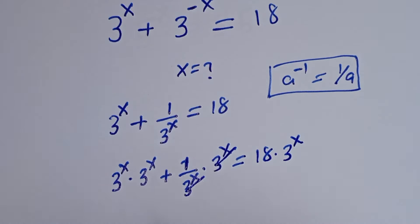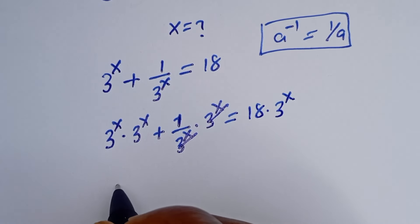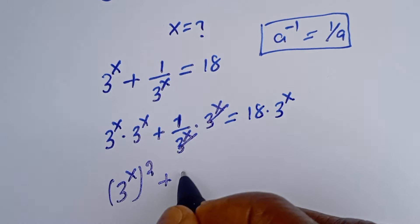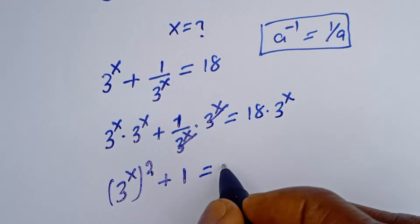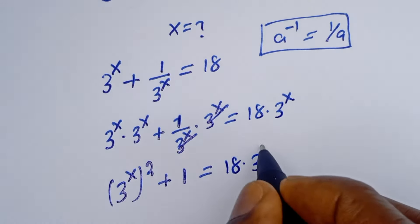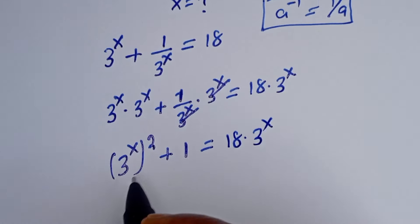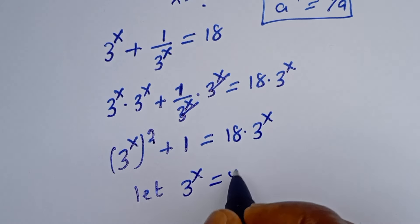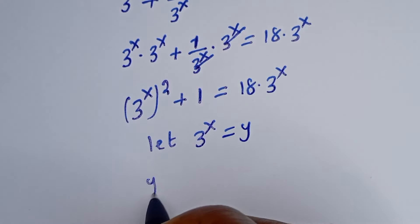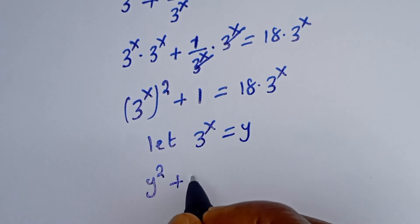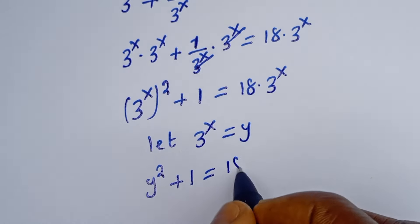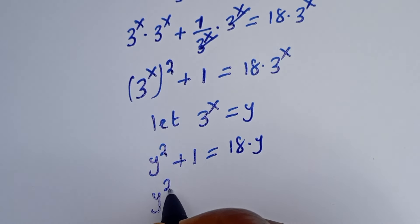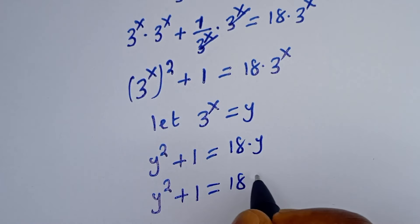We cancel the 3 to the power of s terms on the left. So 3 to the power of s multiplied by 3 to the power of s gives 3 to the power of 2s, and plus 1 is equal to 18 multiplied by 3 to the power of s. Then, let 3 to the power of s equal y. This becomes y squared plus 1 is equal to 18y.